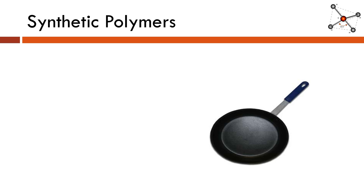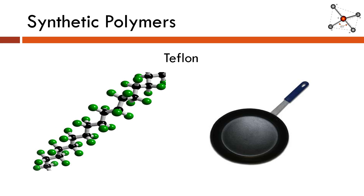Pans and pots are not polymers, but the coating that goes on nonstick ones can be a polymer. This is Teflon. Teflon is another long chain of carbons, except this time instead of having hydrogens bonded to it, we have all fluorines bonded to it, and we get that really unique nonstick property.